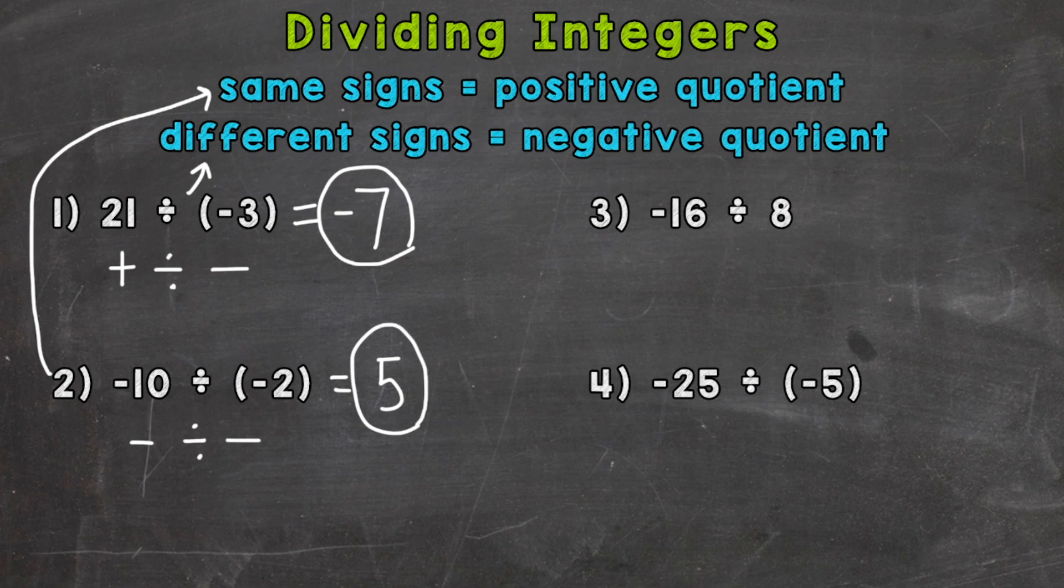Number 3, we have negative 16 divided by 8. So again, we can think of this as just the fact, 16 divided by 8, which gives us 2. Let's look at our signs. We have negative divided by a positive, so different signs equals negative quotient. So our quotient, or final answer there, is going to be a negative 2.